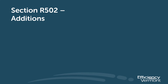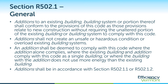Section R502 covers additions requirements. In general, section R502.1 states that additions to an existing building, building system, or portion thereof need to conform with the requirements of new construction, without requiring the unaltered portion of the existing building or building system to comply with this code. An addition shall be deemed to comply where the addition alone complies, where the addition and the existing building comply as a single building, or where the building with the addition does not use more energy than the existing building.